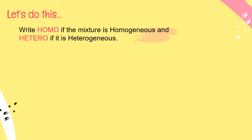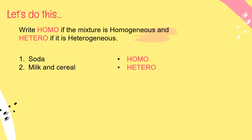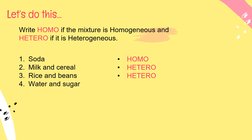Have you learned from our discussion? Let's answer this. Write homo if the mixture is homogeneous and hetero if it is heterogeneous. Number one: Soda — it is homo. Number two: Milk and cereal — it is hetero. Number three: Rice and beans — it is hetero. Number four: Water and sugar — it is homo. Number five: Water and oil — it is hetero.